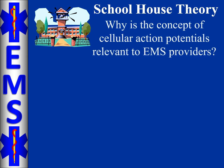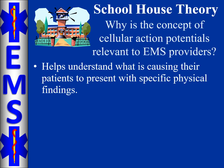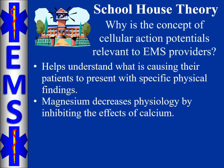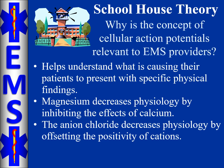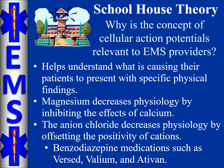You may be asking what the relevance is to the typical EMS provider. These concepts provide EMS providers with the understanding and context to know why their patient is presenting the way that they are. We've introduced two separate mechanisms the body uses to decrease or minimize physiologic function. Magnesium, whether naturally released by the body or administered by a healthcare professional, decreases the influx of sodium by inhibiting calcium's ability to hold the door open. Chloride, being an anion, accomplishes a similar end through a totally different mechanism — offsetting the positivity of cations so cells are prevented from achieving adequate polarity to initiate a cellular action potential. Benzodiazepines are a perfect example of this chloride mechanism. Versed, Valium, and Ativan are examples of medications that facilitate this process.